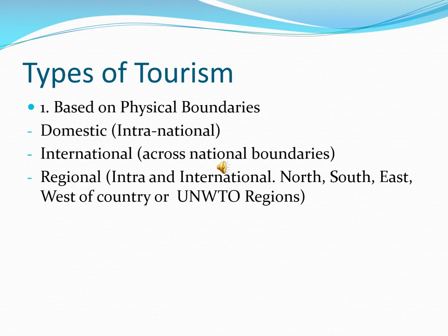The second typology based on physical boundaries is international tourism, where tourists are crossing international boundaries — for example, moving from India to Pakistan, India to Sri Lanka, or Sri Lanka to Singapore. The third type is regional tourism. Regions are a conglomeration of places, countries, or areas.